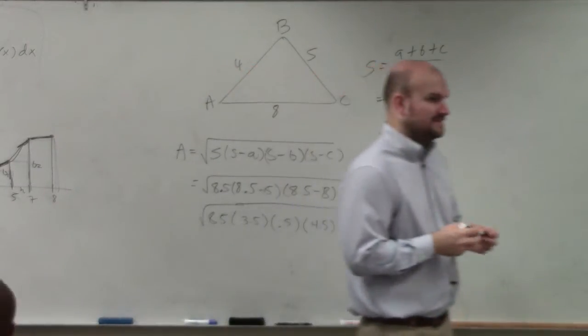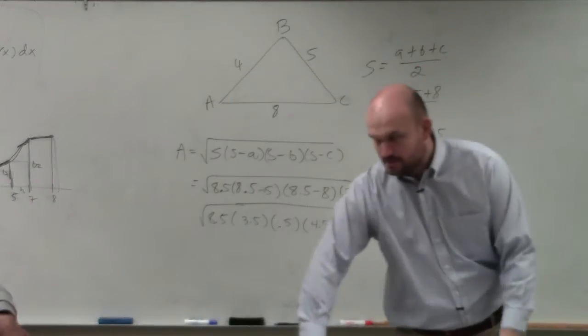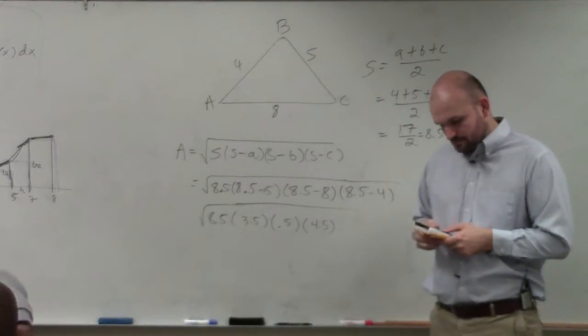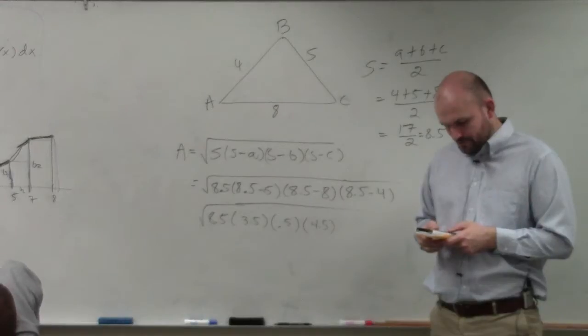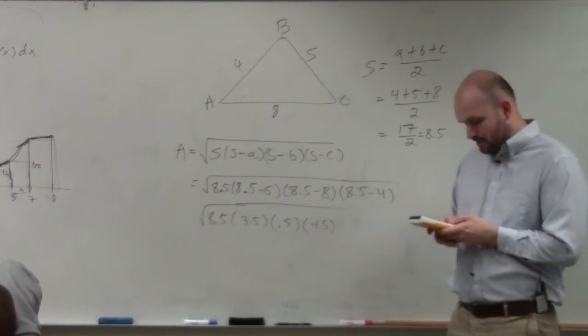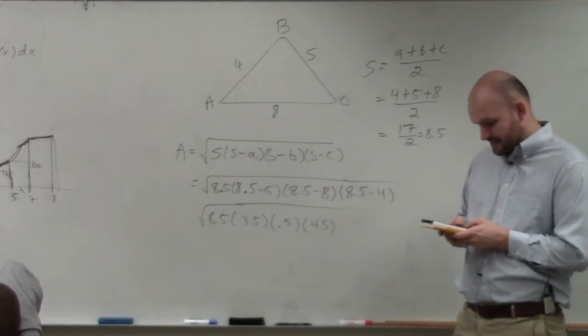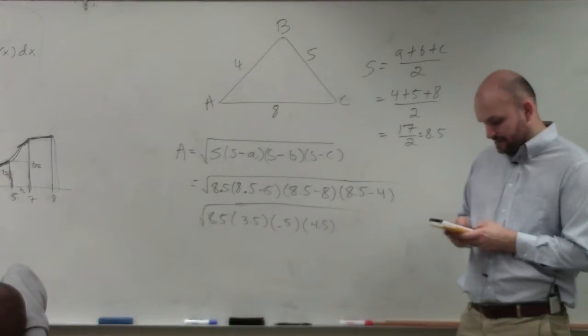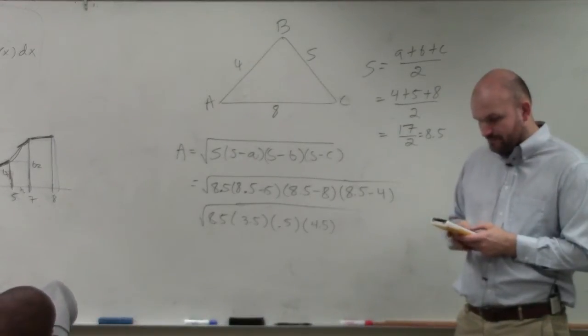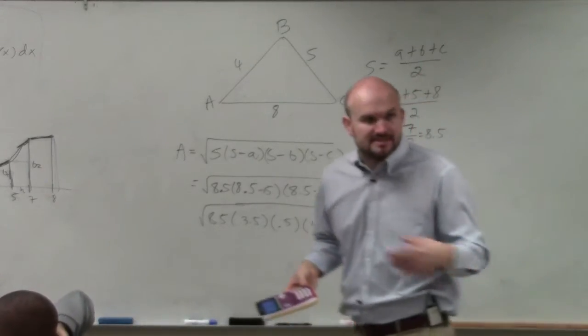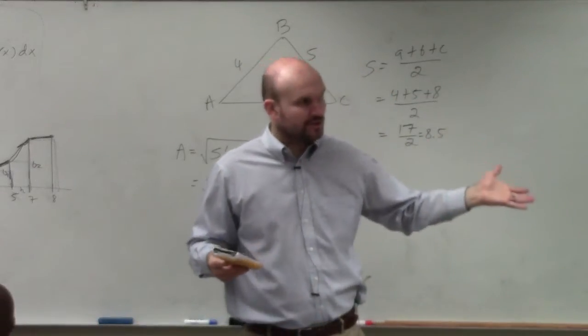Now, that's much easier for me to type in my calculator, right? So now I'll go to my calculator and I'll just do the square root of 8.5 times 3.5 times 0.5 times 4.5. I don't have to worry about parentheses. I've done all of this. I'm good, right?